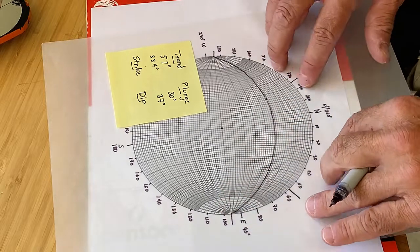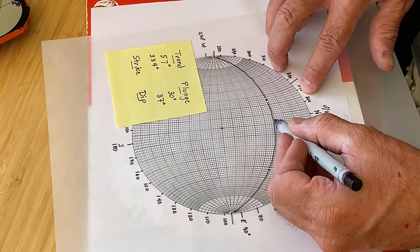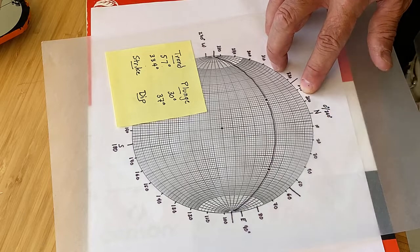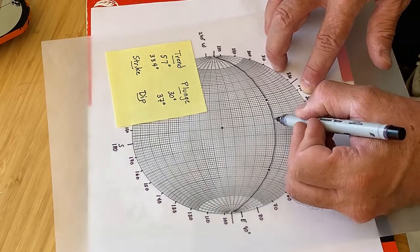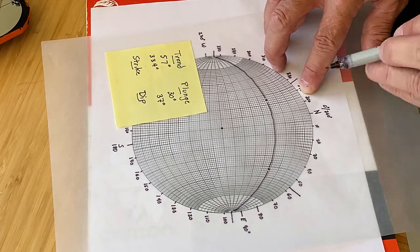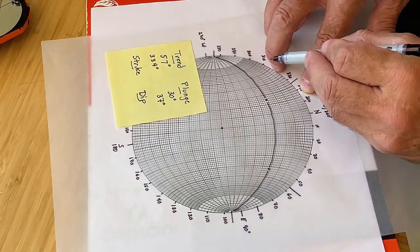So we can count in from the equator to that line to figure out what the dip is. So this is 10, 20, 30, 40—looks like it's about 42 degrees is the dip of that plane that has these two apparent dips, these two lineations in the surface of it.